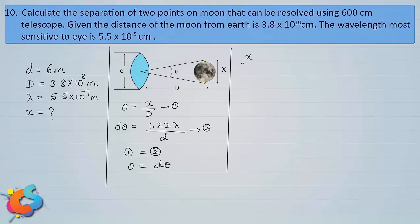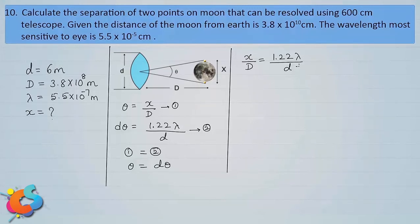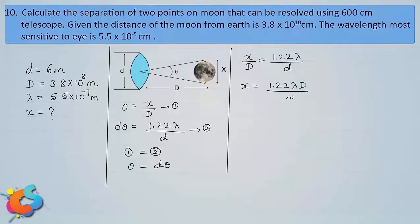Substituting equations 1 and 2: x / D = 1.22λ / d. This is a very important expression frequently asked in competitive examinations. There are four parameters: x, D, d, and λ. Given any three, you find the fourth. Here d, D, and λ are given, so x = 1.22λD / d.